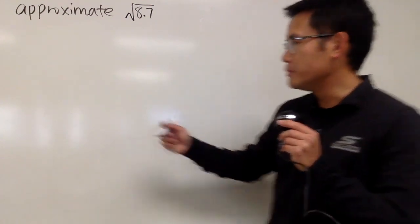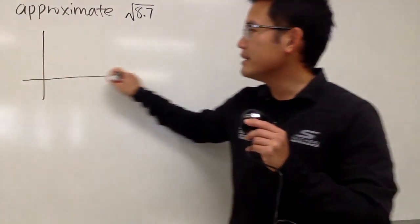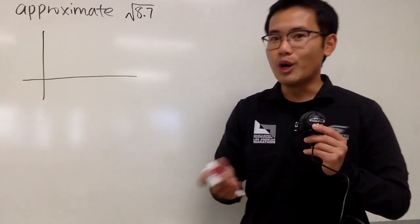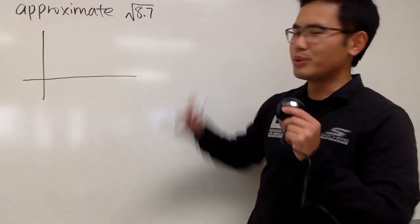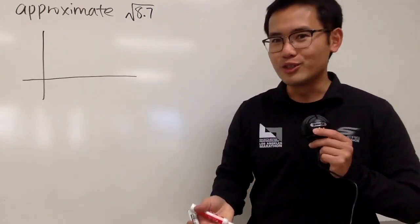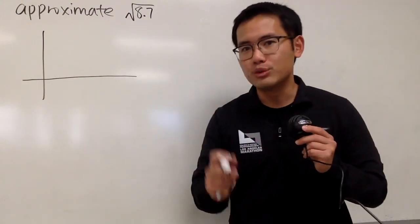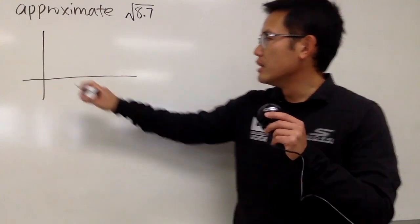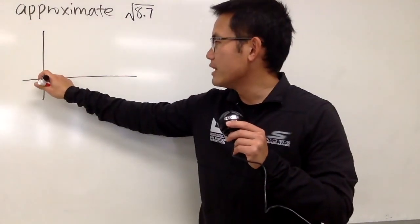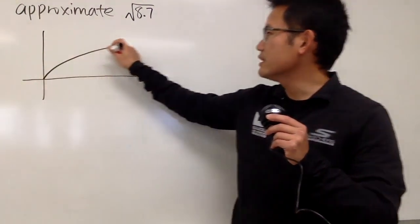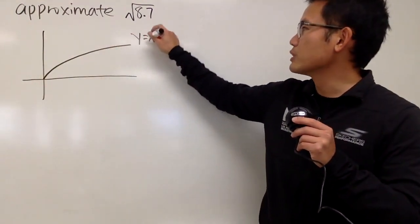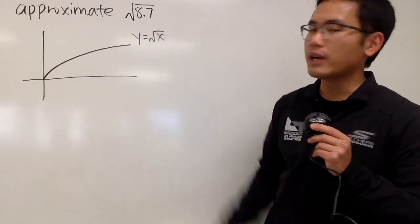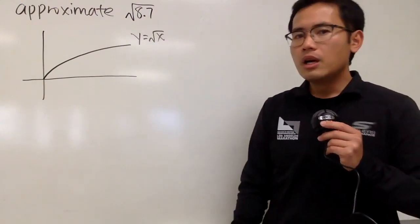First of all, let me just show you guys a picture. In calculus, you should always think about functions. In our situation, the function should be square root of x. So let's say the graph looks like this. I'll put down y is equal to square root of x.